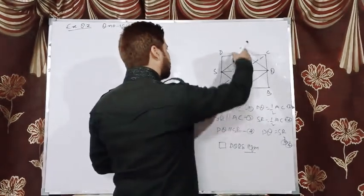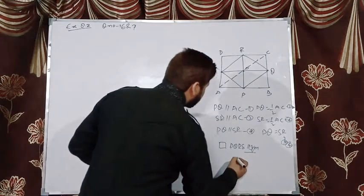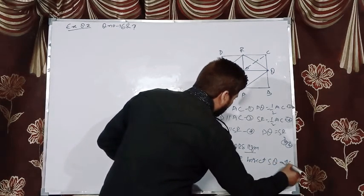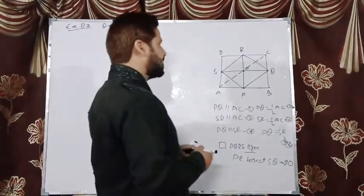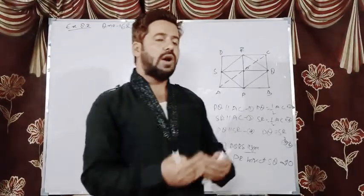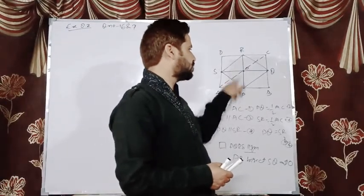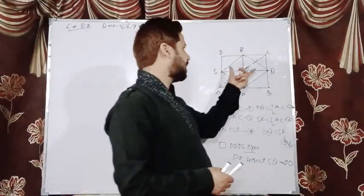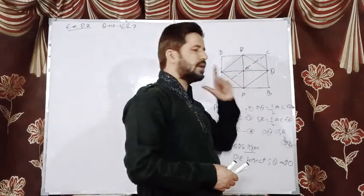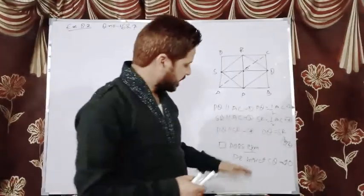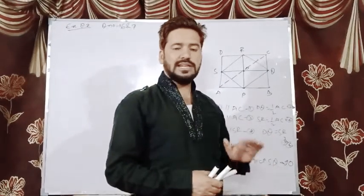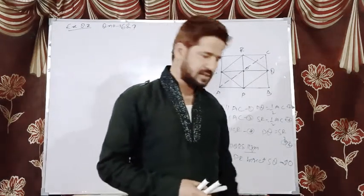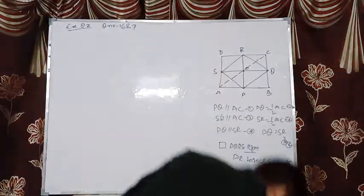Since the diagonals of a parallelogram bisect each other, therefore PR and SQ bisect each other at O. But PR is the line segment formed by joining the midpoints P and R of two opposite sides, and SQ is the second line segment joining the midpoints of the second pair of opposite sides of quadrilateral ABCD. Thus we have shown that the line segments connecting the midpoints of opposite sides of a quadrilateral bisect each other.